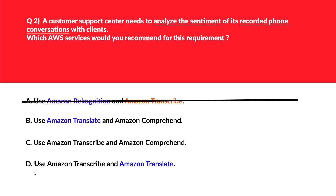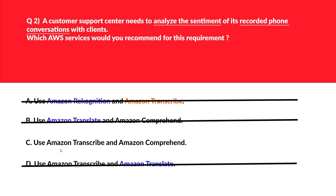Options B and D both contain Amazon Translate. Option B says use Amazon Translate and Amazon Comprehend — Comprehend is good enough but Translate is a problem. Option D says use Amazon Transcribe and Amazon Translate — Transcribe looks good but Translate is used for language translation, not for sentiment analysis. So both are wrong. We are left with option C: use Amazon Transcribe and Amazon Comprehend. Transcribe can convert audio from the phone conversation to text, and Comprehend can perform sentiment analysis on that text — that is the correct answer.